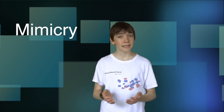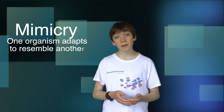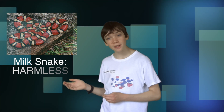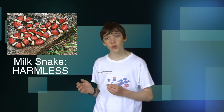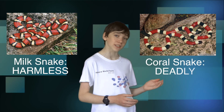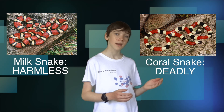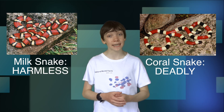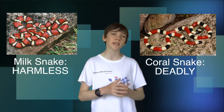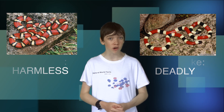Mimicry is another example of co-adaptation. With mimicry, one organism adapts to resemble another. The harmless milk snake has adapted a colour pattern that almost directly resembles that of the deadly coral snake. This mimicry keeps predators away from the milk snake, as they confuse it for the venomous coral snake.